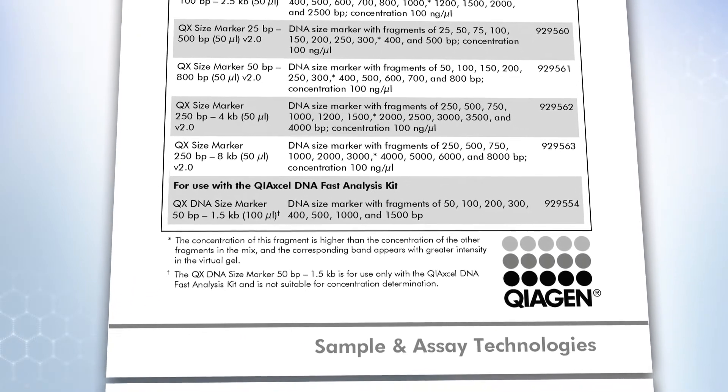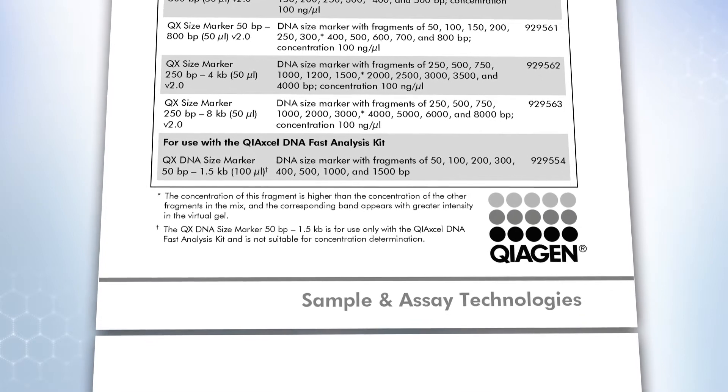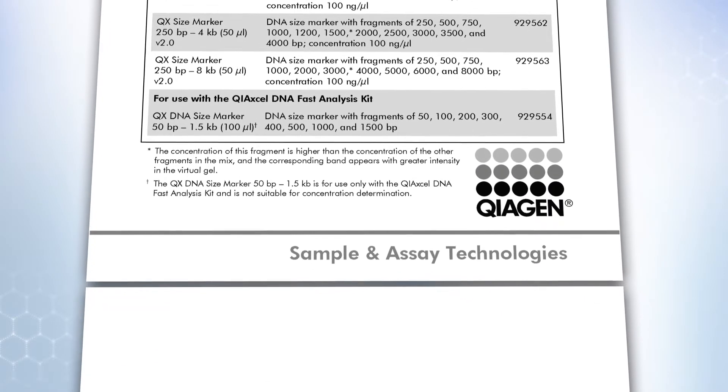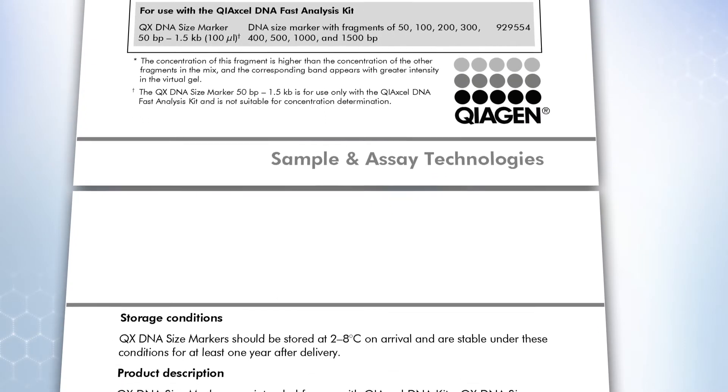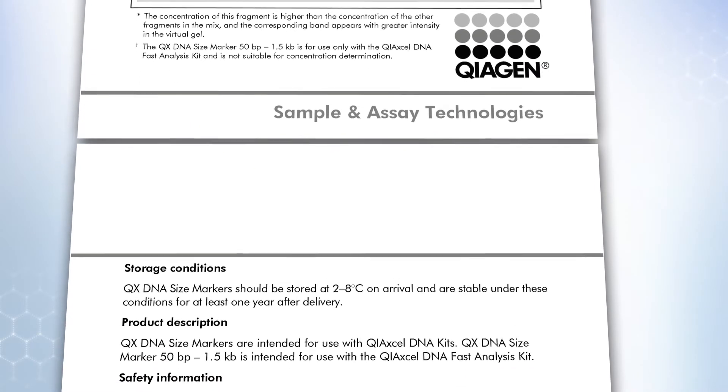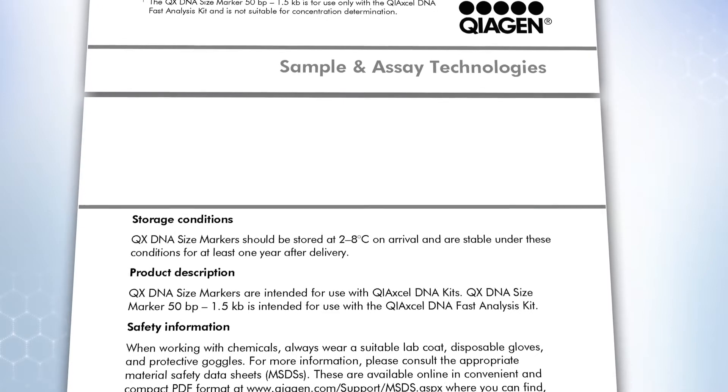For the other DNA kits, the size marker should be diluted depending on the method used. For low concentration methods, dilute the size marker to 10 ng per microliter and for moderate concentration methods, dilute it to 30 ng per microliter.